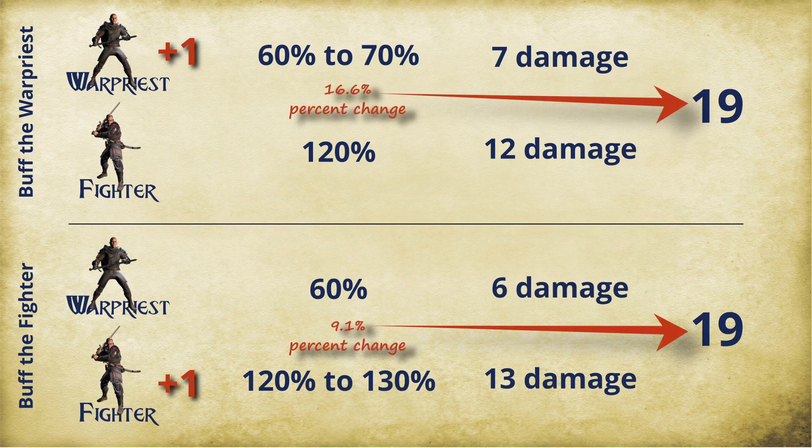It's the same average damage either way. So why did the percent change results indicate a difference between the two options? It's because it considers the starting point of the fighter and expects a higher rate of change. But the rate of change is 10 percent for all those plus one bonuses regardless of where we start from. When it doesn't get a higher rate of change, it gives us a lower percent change result. This means the percent change formula is not measuring what we think it's measuring.